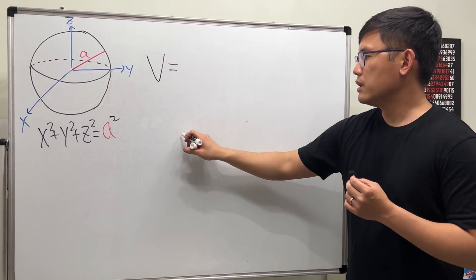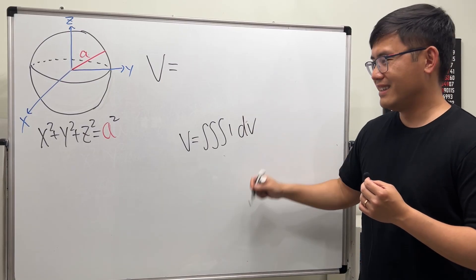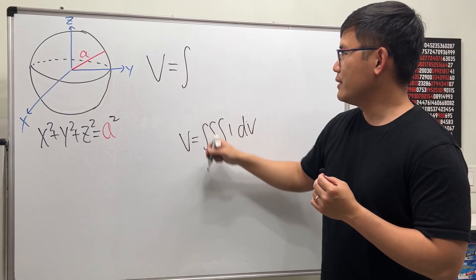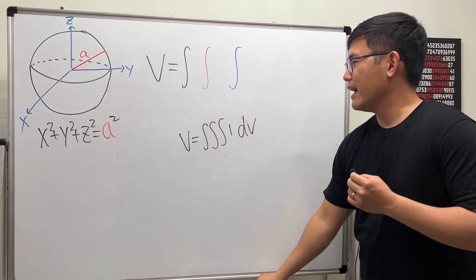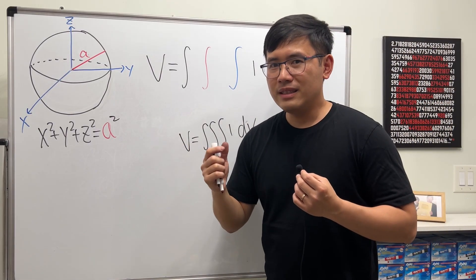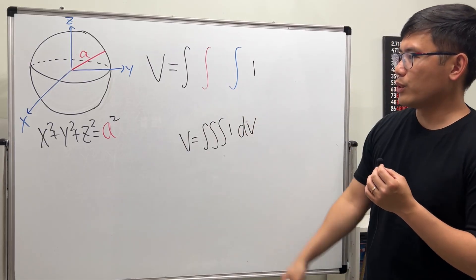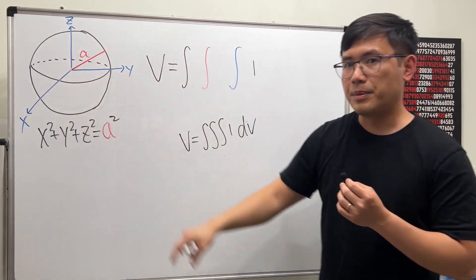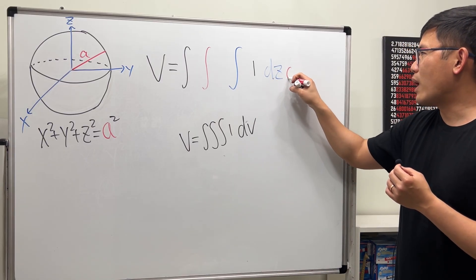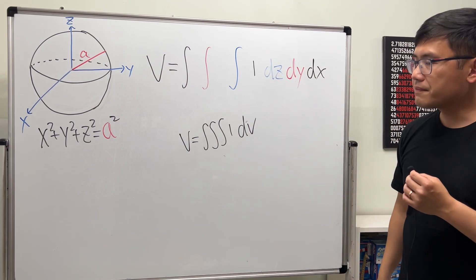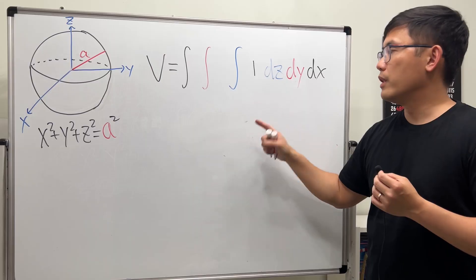Let's do the rectangular coordinates first. The volume equals the triple integral of one dV. So we have three integrals integrating one, and dV in the xyz world is just dx dy dz. Based on the picture, I'd like to do dz first, then dy, and lastly dx.